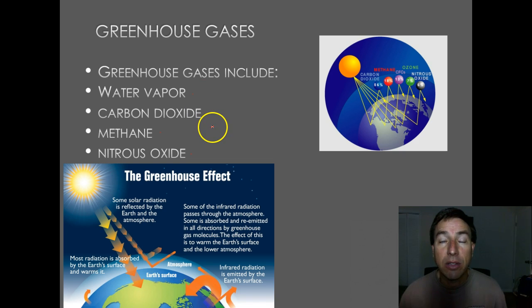Now the greenhouse effect unfortunately has gotten a bad rap. The greenhouse effect is always associated with global warming. Unfortunately, because of the greenhouse effect, we have global warming, but also because of the greenhouse effect, we have a warm planet. If we didn't have the greenhouse effect, we would be just a ball of ice floating out in space.